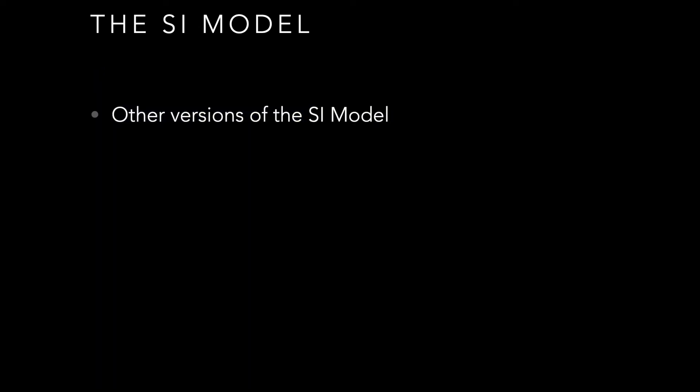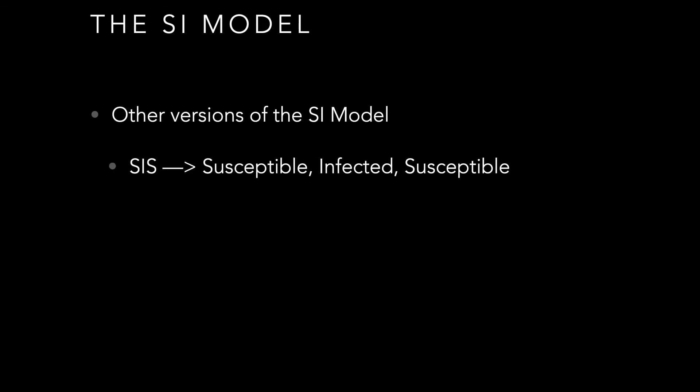There are other versions of the SI model. There's SIS — susceptible, infected, susceptible — where in the basic SI model once you become infected you're infected for all time. The SIS model is slightly more sophisticated: you are originally susceptible, you become infected, and after some amount of time you lose the infection status and return to susceptible.